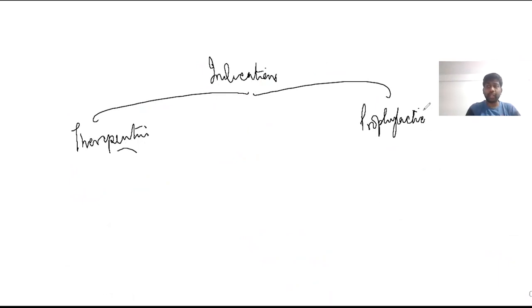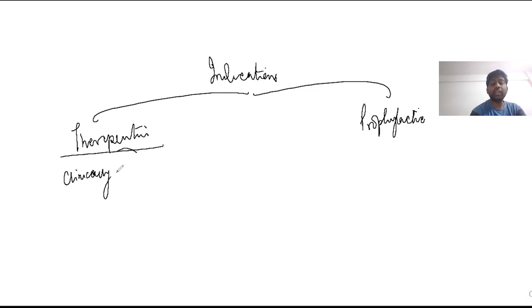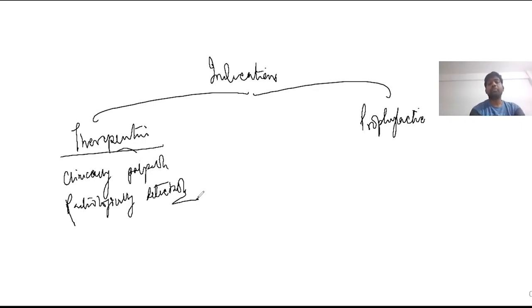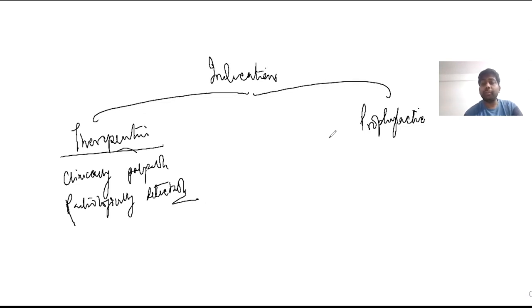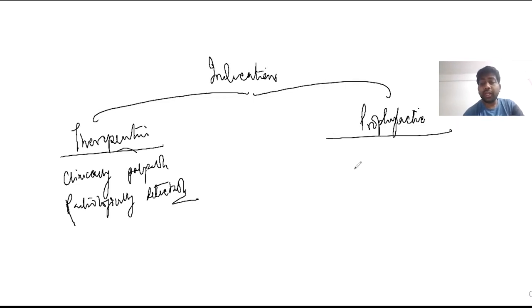Therapeutic neck dissection means we perform the dissection when there is a clinically palpable lymph node or a radiologically detectable lymph node — whether found clinically or radiologically, if a lymph node is found, we proceed with dissection, and it is called therapeutic dissection. Prophylactic neck dissection is done when lymph nodes cannot be palpated nor detected radiologically, but dissection is still performed — as in medullary thyroid cancer. That is known as prophylactic neck dissection.